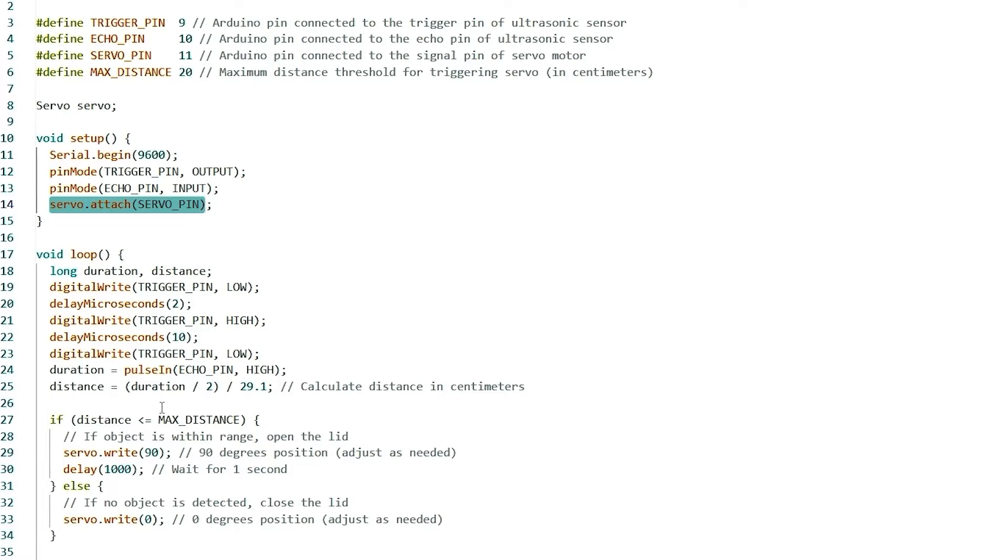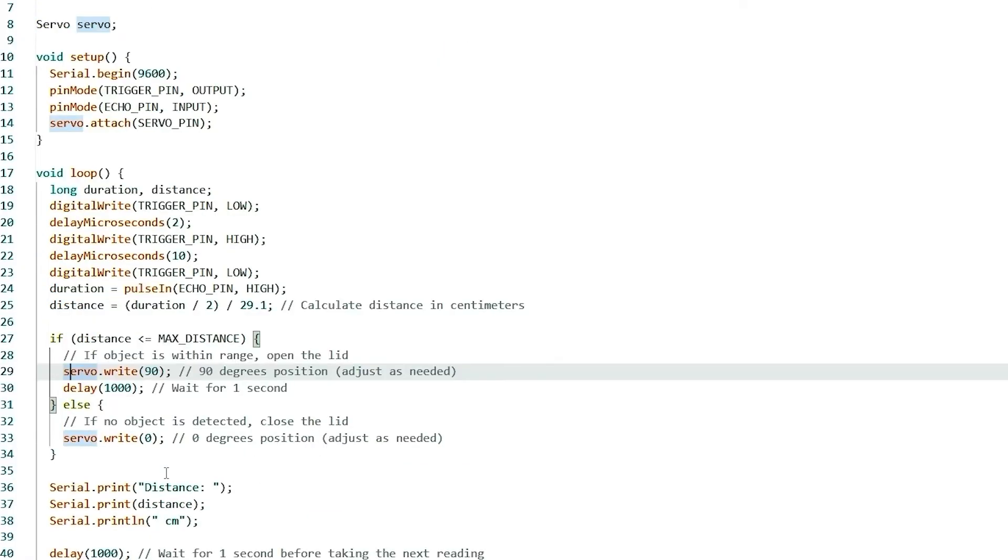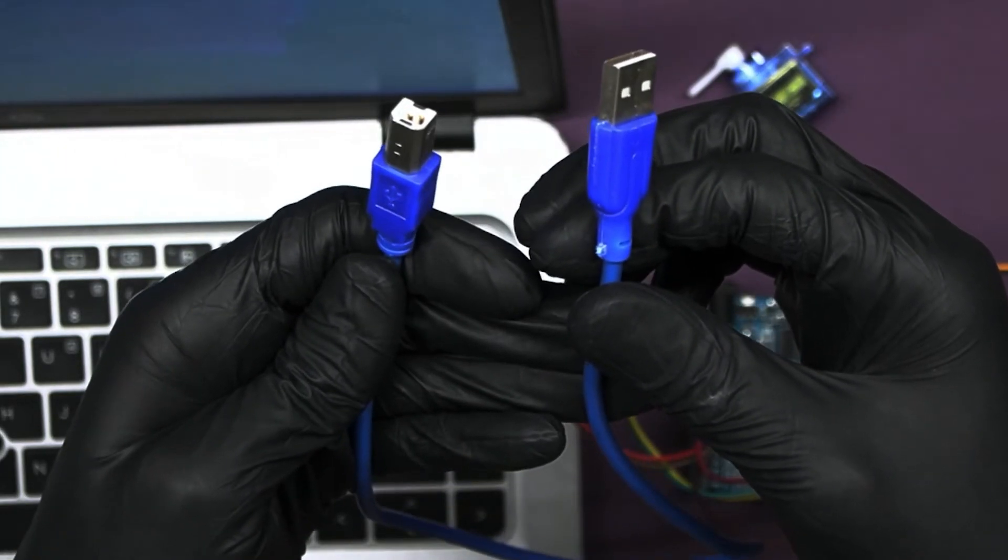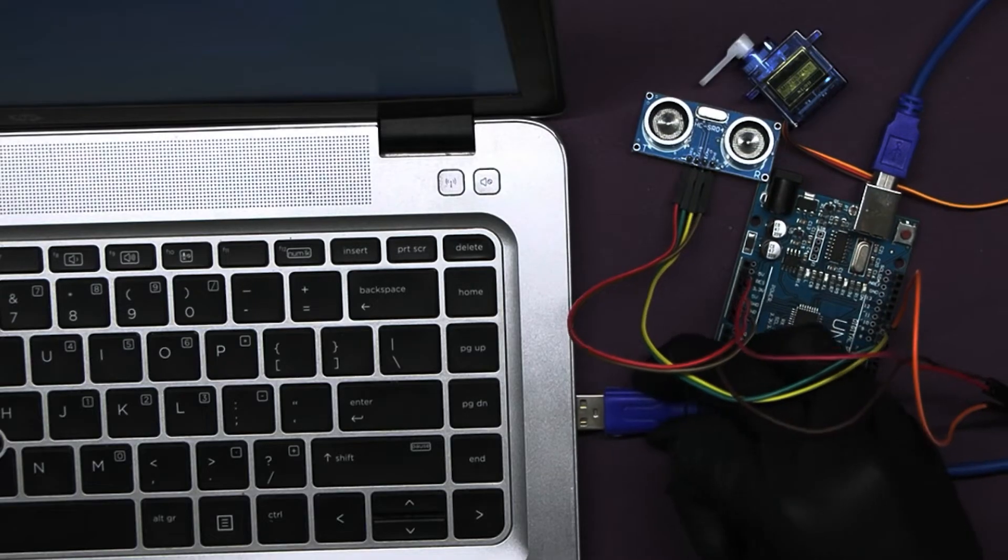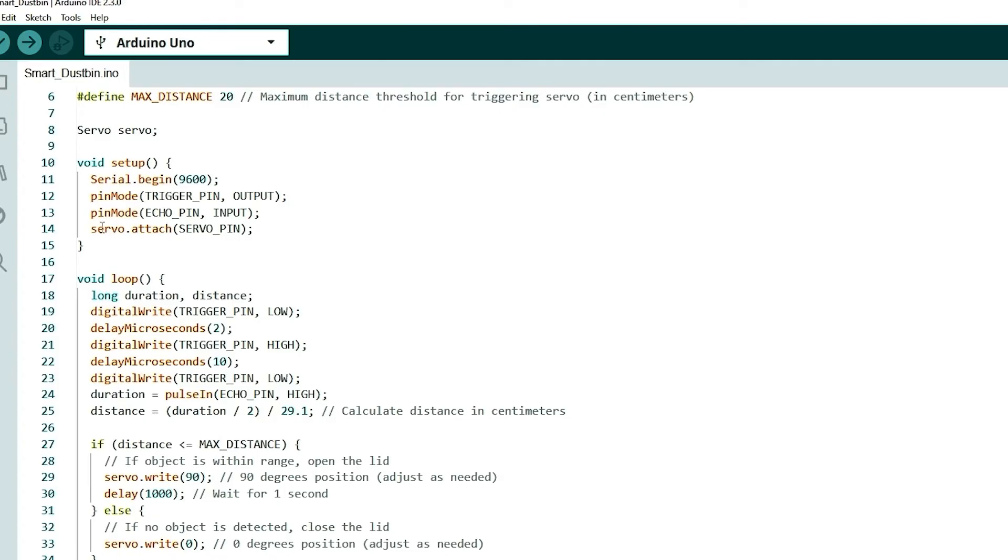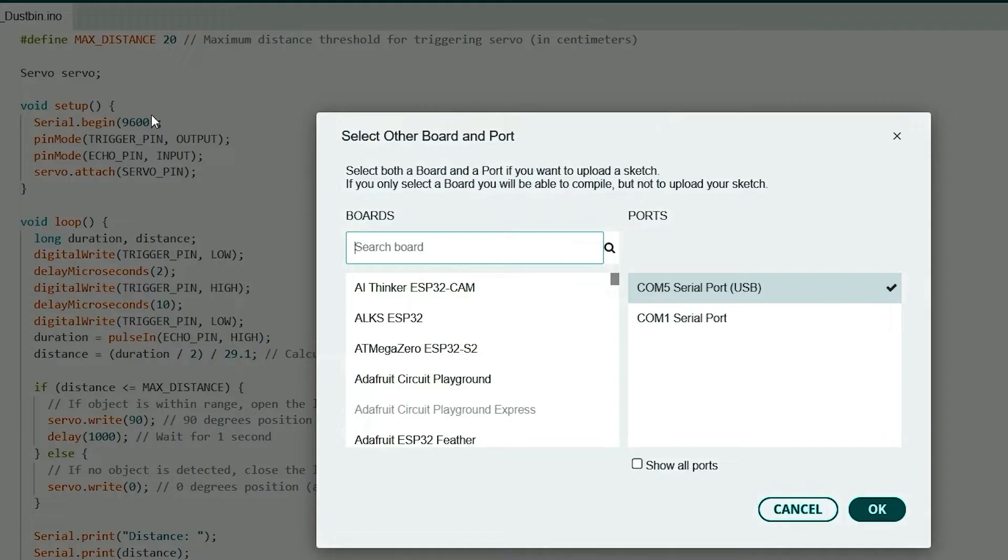Now upload the code by following some instructions. Connect the Arduino UNO to your computer using a USB cable. Then go to Tools, then Port, and select port. Then go to Boards in the same menu and select Arduino UNO.